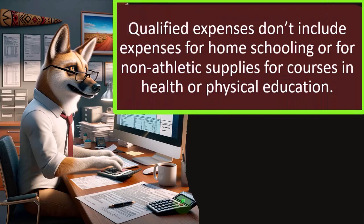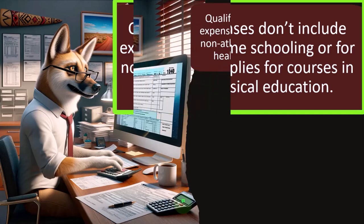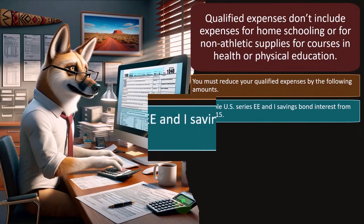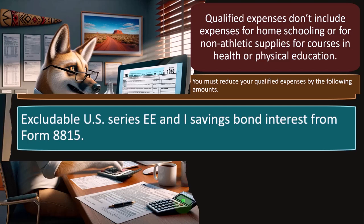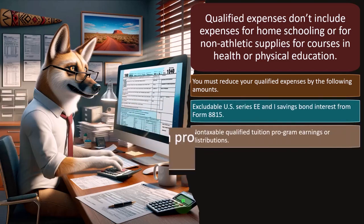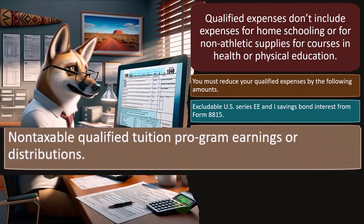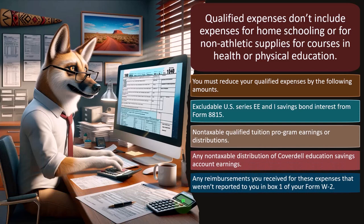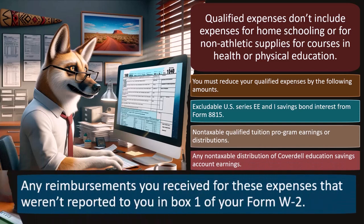Qualified expenses don't include expenses for homeschooling or for non-athletic supplies for courses in health or physical education. You must reduce your qualified expenses by the following amounts: excludable US Series EE savings bond interest from Form 8815, non-taxable qualified tuition program earnings or distributions, any non-taxable distributions of Coverdell education savings account earnings, and any reimbursement you receive for these expenses that weren't reported to you in Box 1 of your Form W-2.